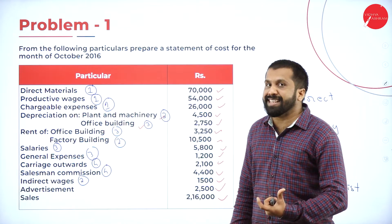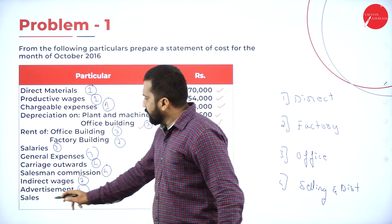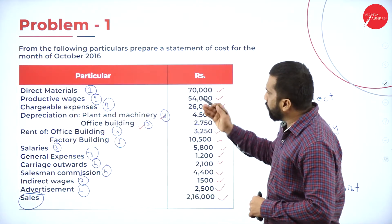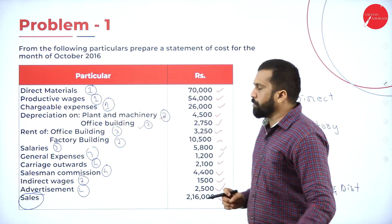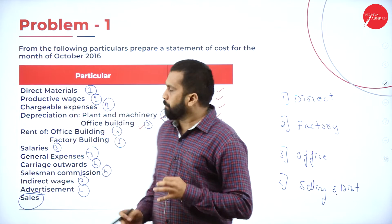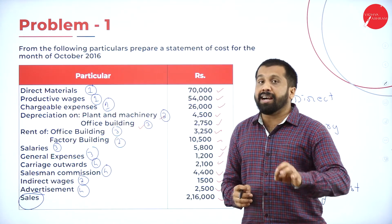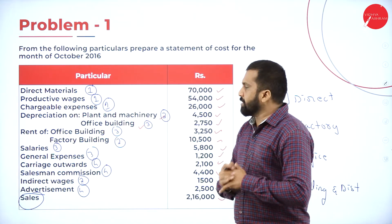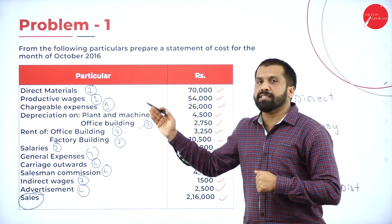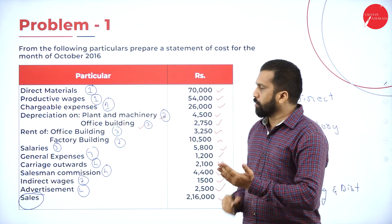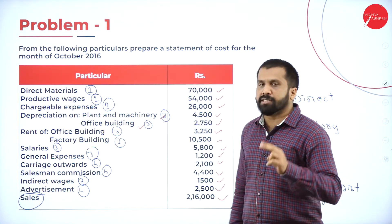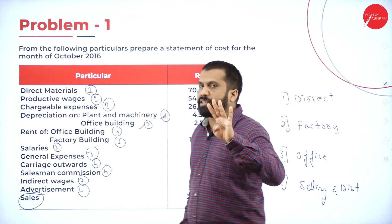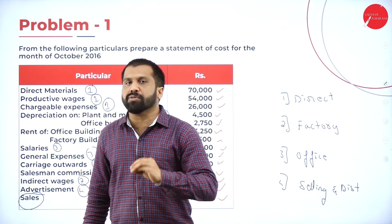Advertisement — we do advertisement during sales, so it will be selling and distribution, fourth. There is a total sales figure we have. In your examination, you are not supposed to write all these markings on your question paper. Whatever numbers or shortcuts I am using here — until you learn, do this in your notebook. Once you are familiar with this concept, then this numbering is not required. By looking at carriage outward you'll know it goes to fourth; salary goes to third; general expenses goes to third; advertisement goes to fourth. If you do two or three problems, it will be very easy.